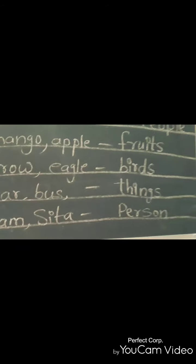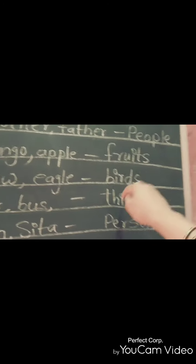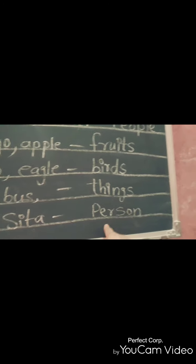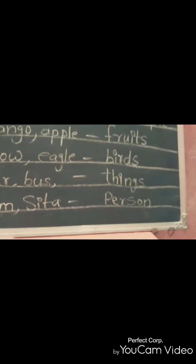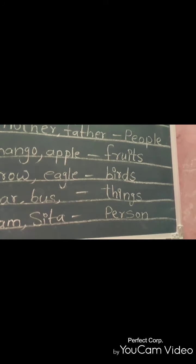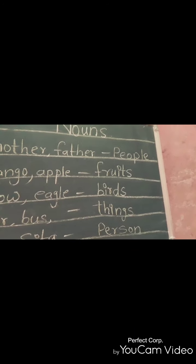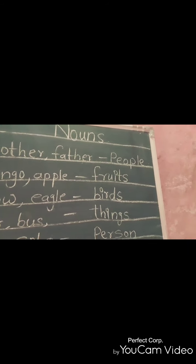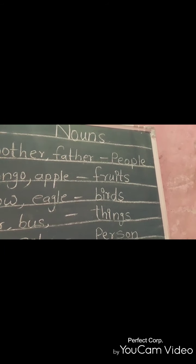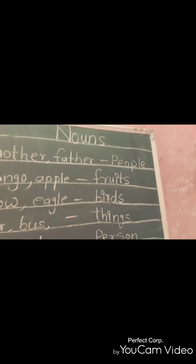So noun is the name of people, fruits, birds, things, person, places. These all are nouns. Now we are going to study about noun with the help of different parts. Part wise, I am going to send you video on your group.